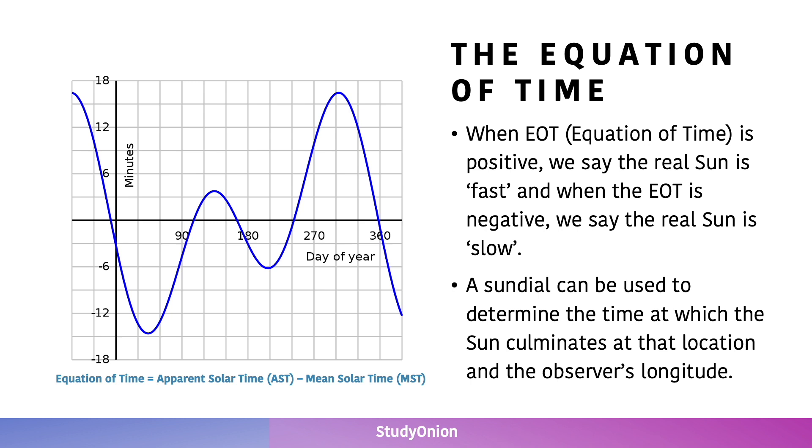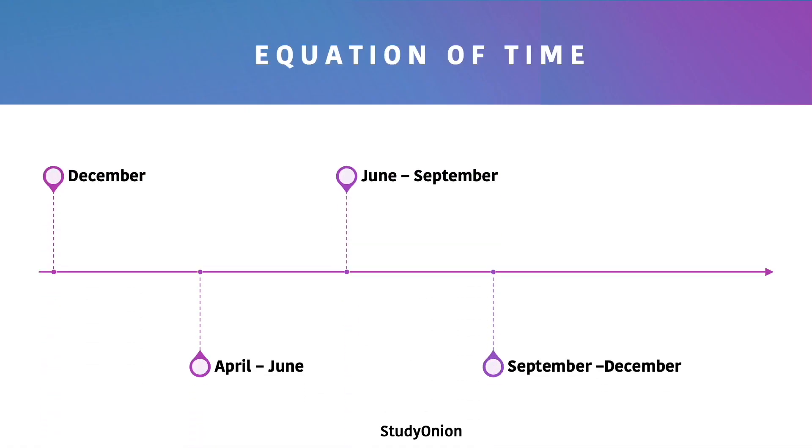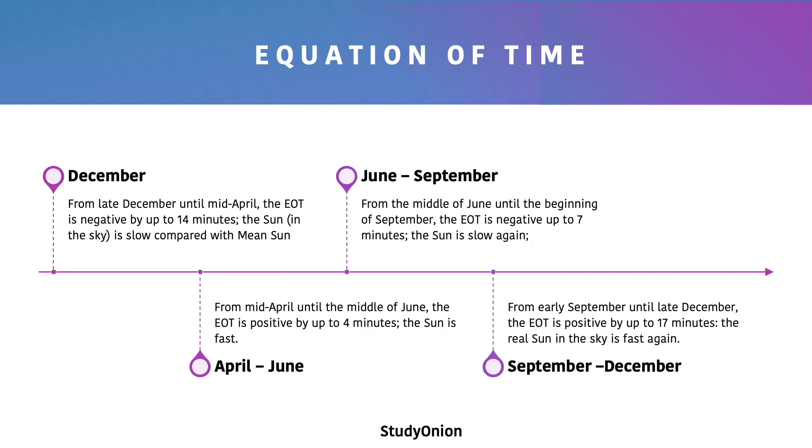From late December until mid-April, the EOT is negative by up to 14 minutes. The sun in the sky is actually slower in comparison with the mean sun. We say that the sun is slow, meaning the apparent motion of the real sun is slow in comparison with the mean sun.